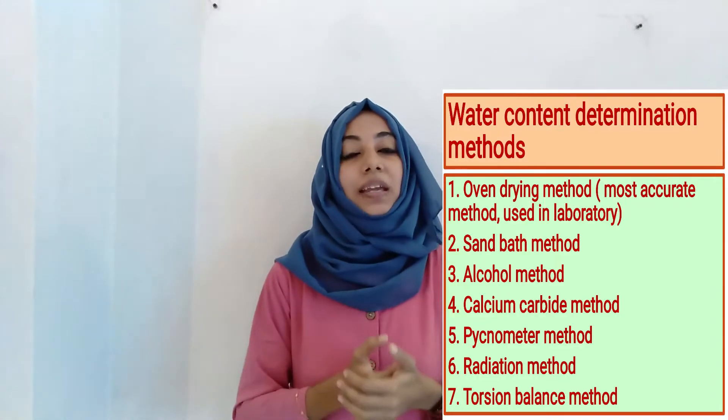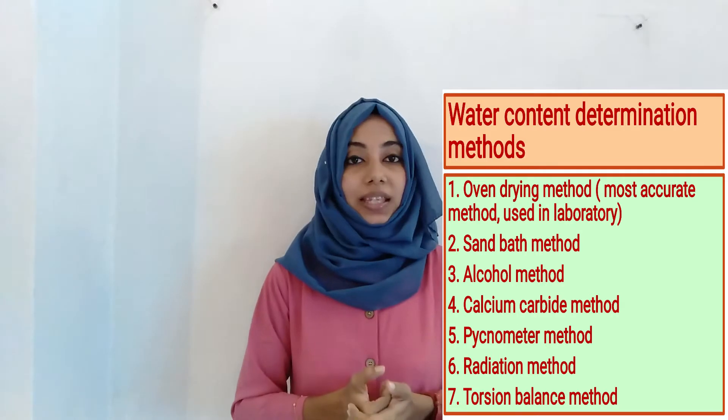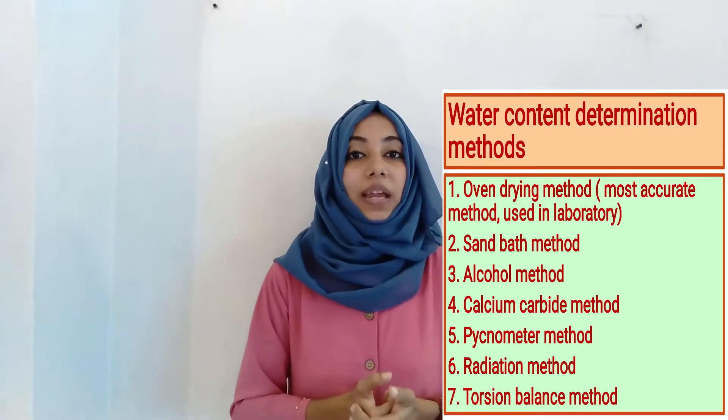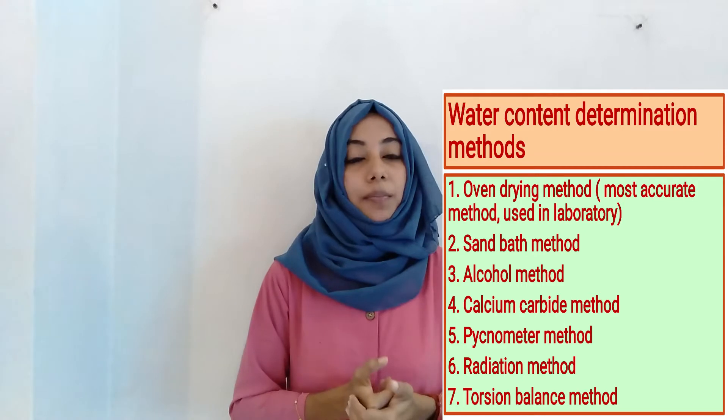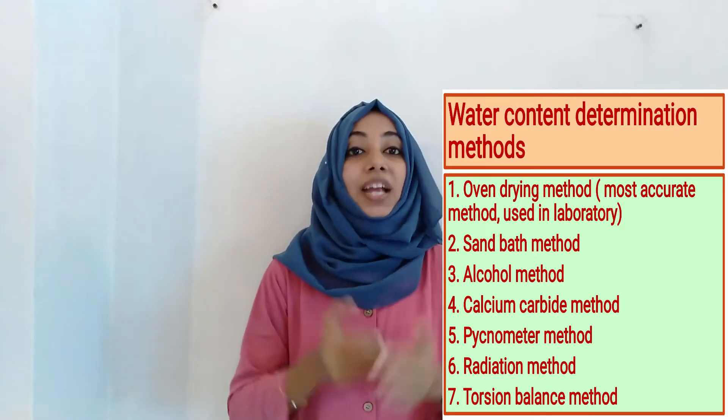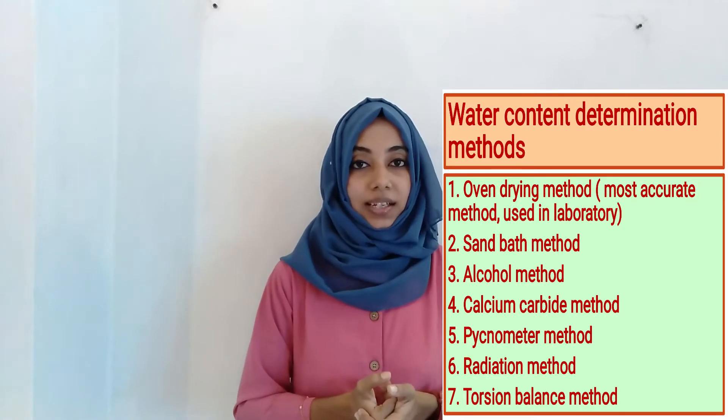Now we are going to discuss the determination of water content. There are mainly seven methods for determination of water content: oven drying method, sand bath method, alcohol method, calcium carbide method, pycnometer method, radiation method, and finally torsion balance method.